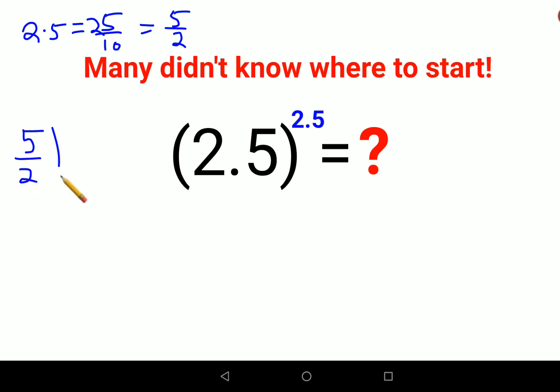Now this 5 upon 2 as the exponent can be written as 5 upon 2 the whole raised to 2 times 1 upon 2. This can be written as 5 upon 2 the whole raised to 2 into 1 upon 2.